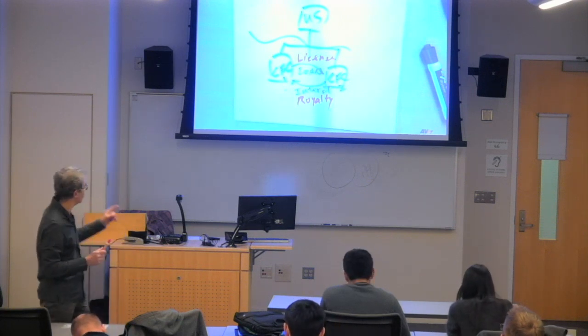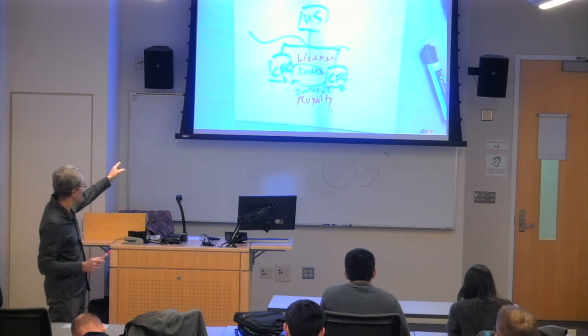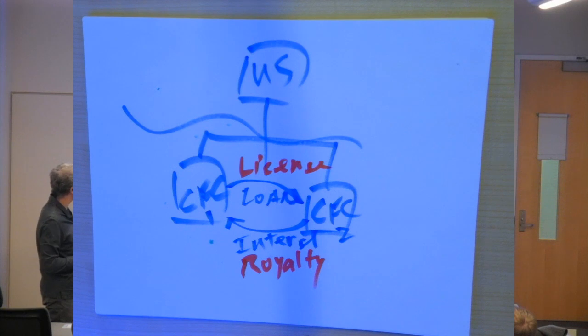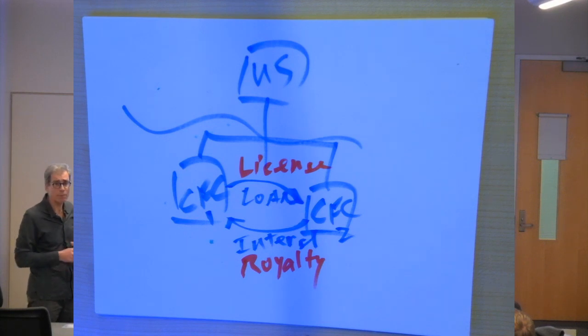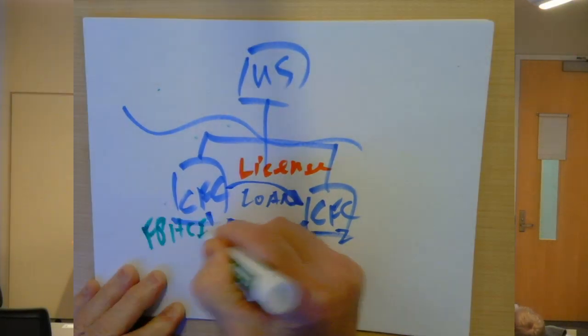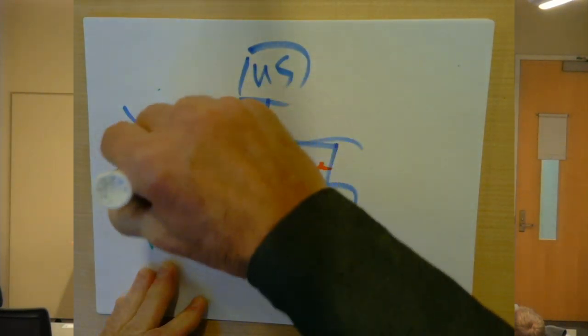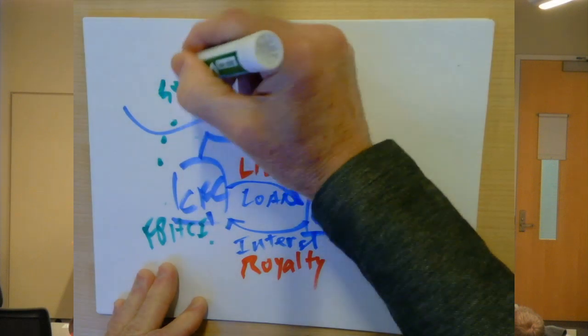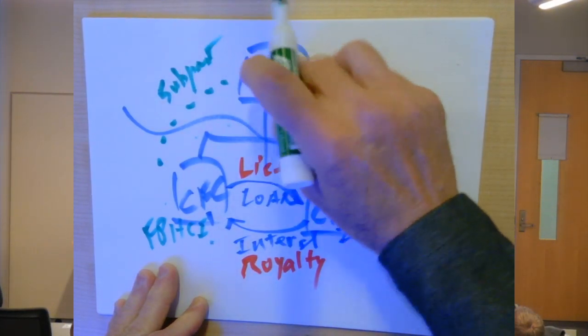Okay, so if there are interest and royalty payments going from CFC 2 to CFC 1, does that mean that CFC 1, to the extent of this interest, royalty, rental, whatever it happens to be, will that cause foreign personal holding company income here within the CFC, CFC 1, which of course, if it is, can cause a subpart F inclusion of income up here.